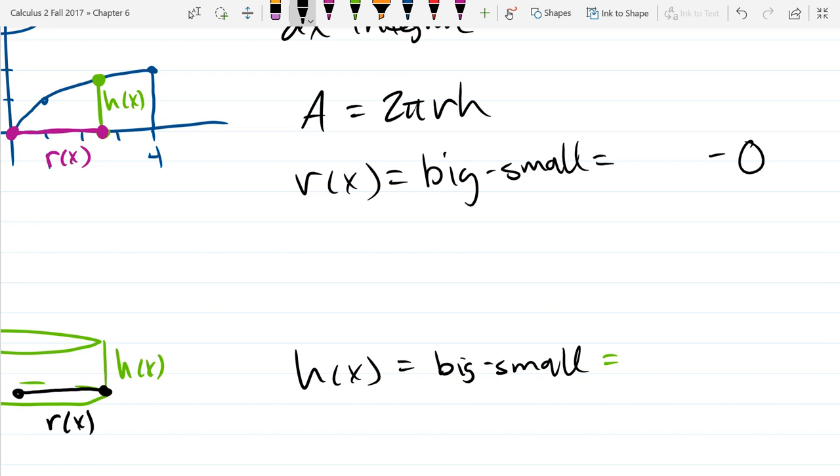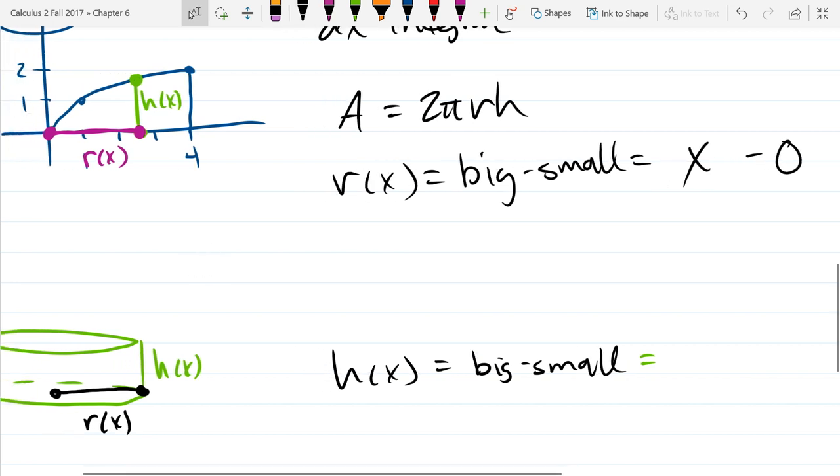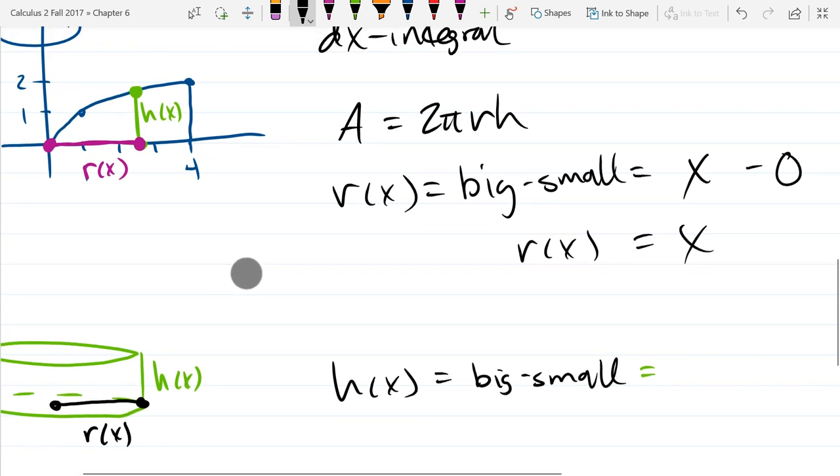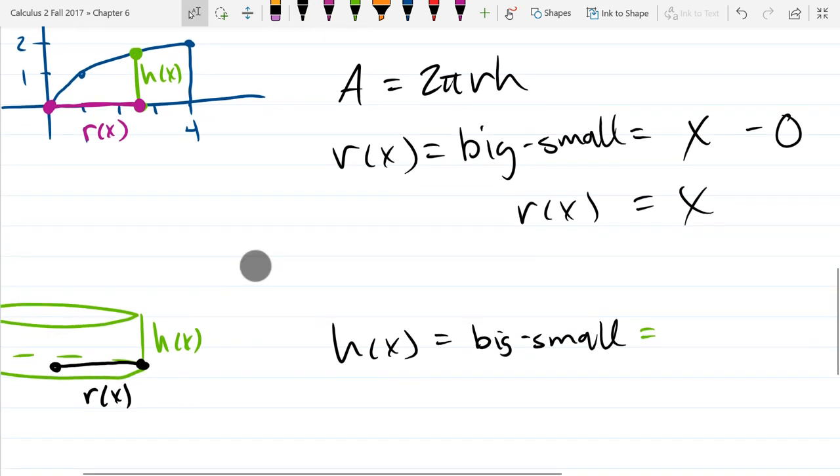What is big? That's going to be a little bit tricky. It's hard to think about the first time. It's just X. So whatever X value I'm at at that moment, that is the big. So that can be a little tricky at first. So big minus small is just X. So r(x) is X. What about the height? Let's do the big. What's the small height? It's also zero.